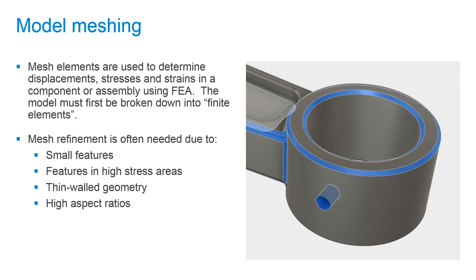First, let's talk about model meshing. Mesh elements are used to determine displacements, stresses, and strains in a component or assembly using FEA or finite element analysis. To do this, the model must first be broken down into these finite elements.